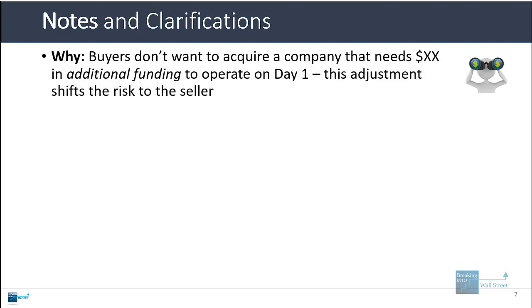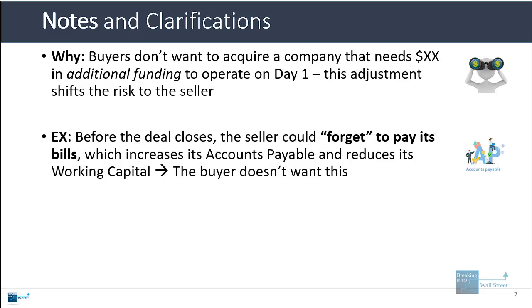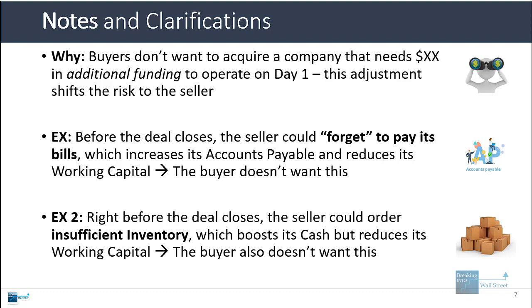Why do buyers do this? They don't want to acquire companies that need additional funding just to run their normal business on day one, so they do this to shift some of the risk to the seller. For example, right before a deal closes, a seller could delay paying its bills — increasing accounts payable and reducing working capital. Or the seller might not order enough inventory, boosting its cash balance but reducing operating working capital. The buyer wants the company to keep paying bills and ordering inventory as it normally would.